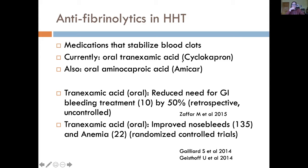The one currently available and most typically used is tranexamic acid, also known as cyclocapron. There is quite a bit of experience using this — at the Toronto HHT centre for more than 20 years. Most of the evidence for tranexamic acid in HHT-related bleeding comes from nosebleed studies. Clinical trials are typically designed to measure nosebleeds because that's more feasible to measure and patients can report them, whereas GI bleeding is harder to report.